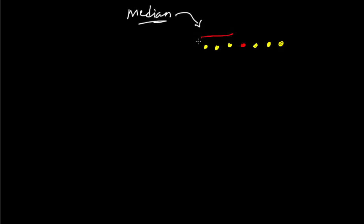The meaning of median is a value or a quantity lying at the midpoint of a frequency distribution. It should be so much in between that you can roughly visualize the rest of the values in two different blocks. That's why it's sometimes called a partition value, because it's dividing the entire data set.